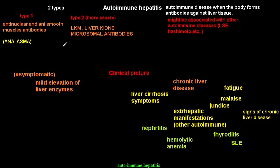In this video I'm going to conclude my talk about chronic liver disease, specifically autoimmune hepatitis. From the name, it is an autoimmune disease where the body forms auto-antibodies against the liver tissue. In autoimmune diseases, the body misidentifies normal body antigens as foreign and starts to attack itself.